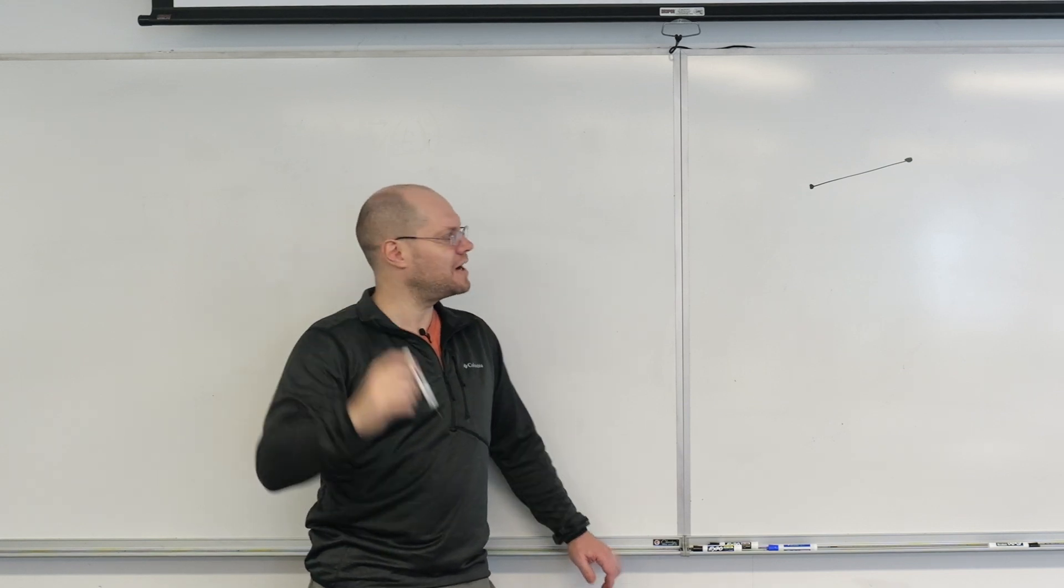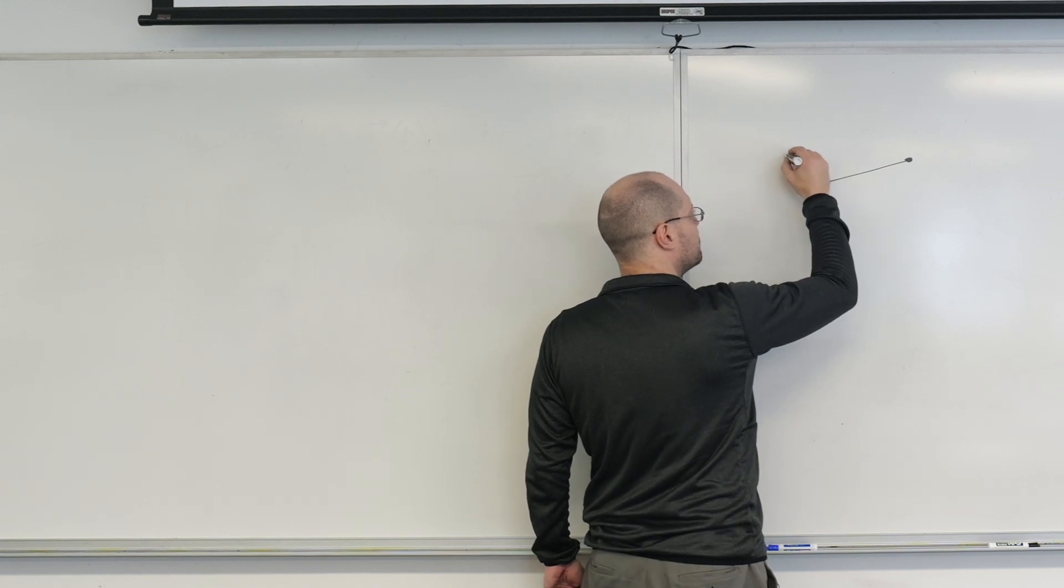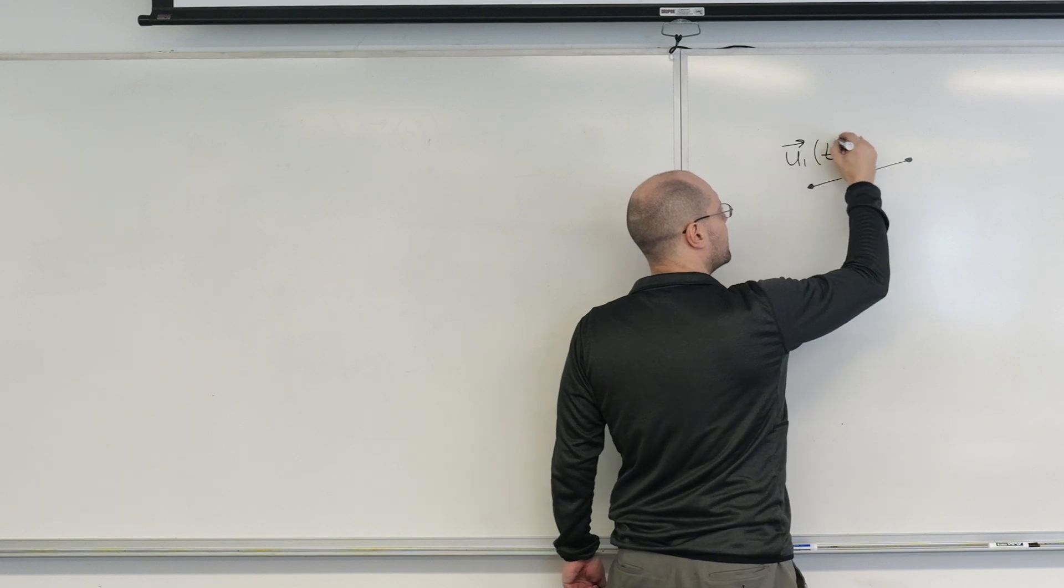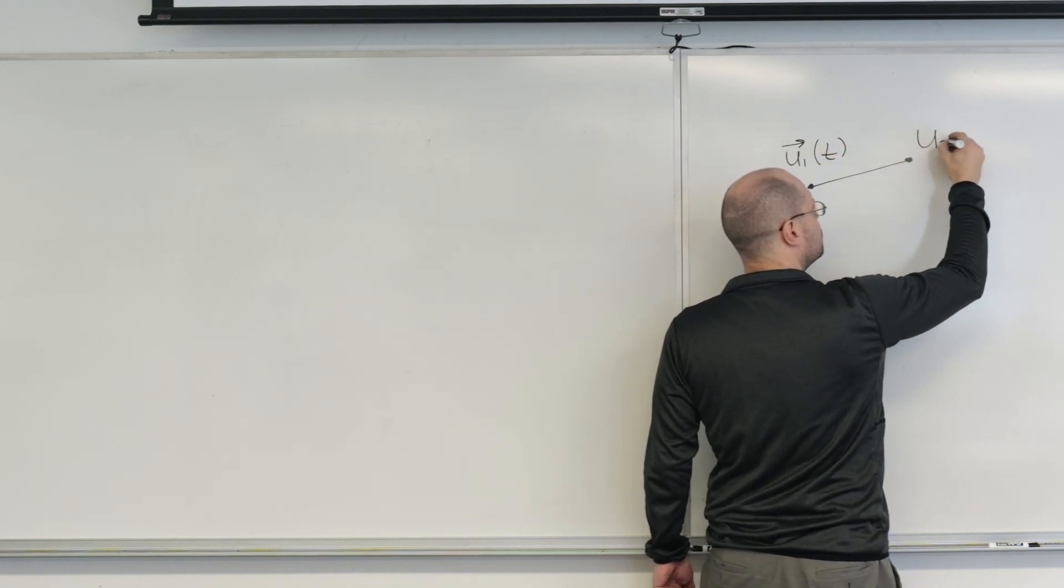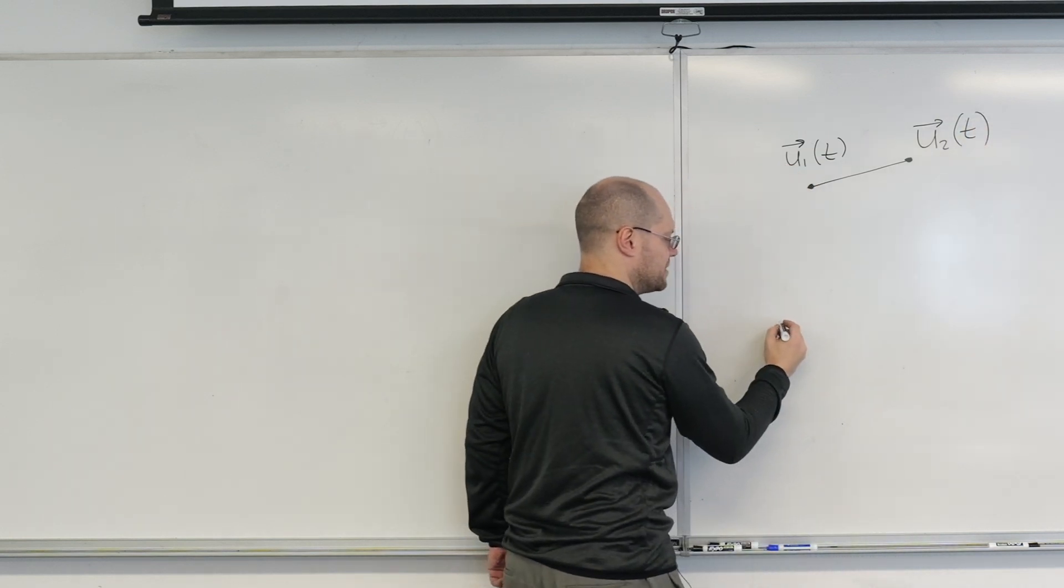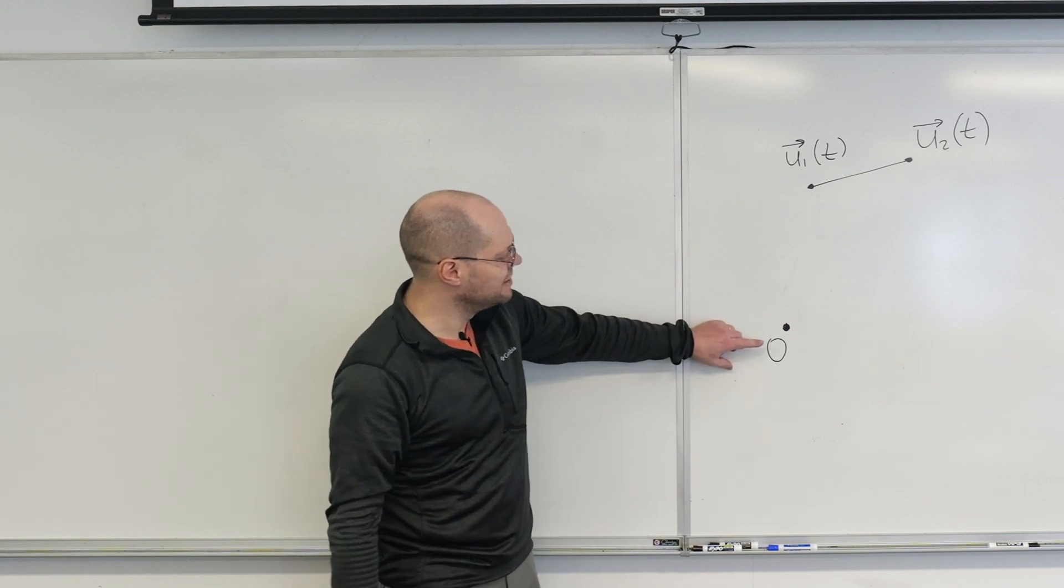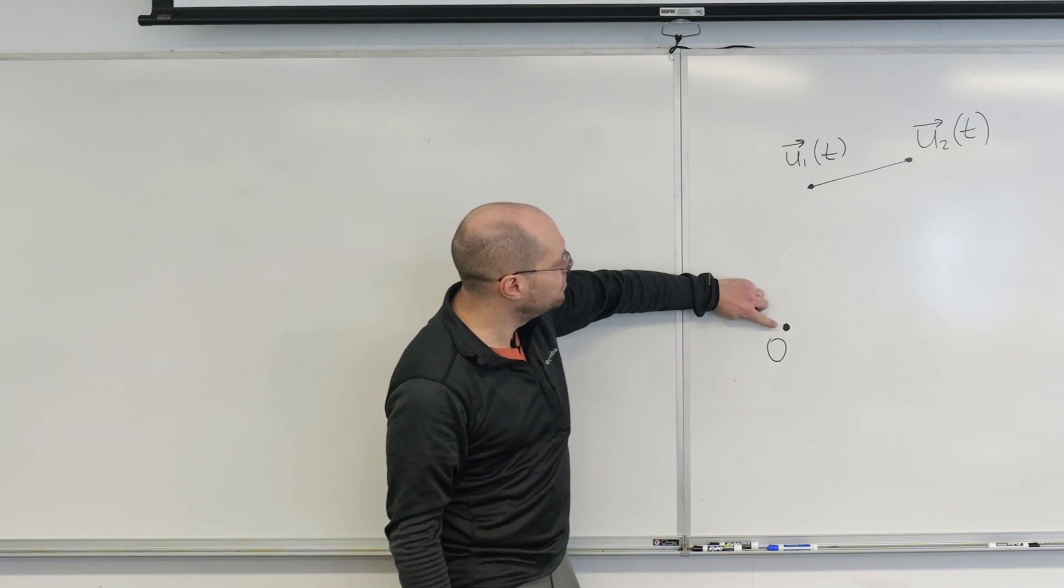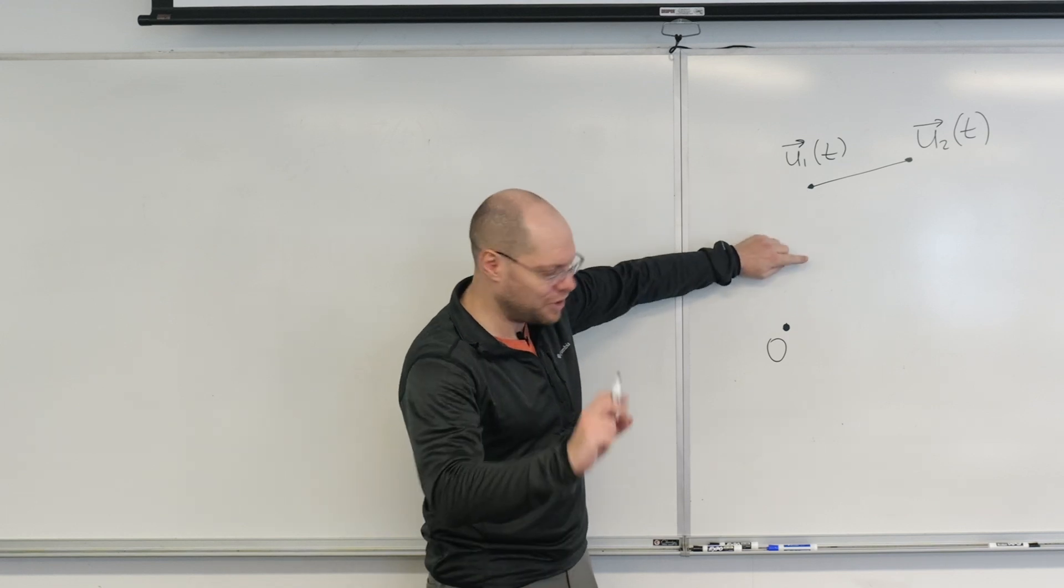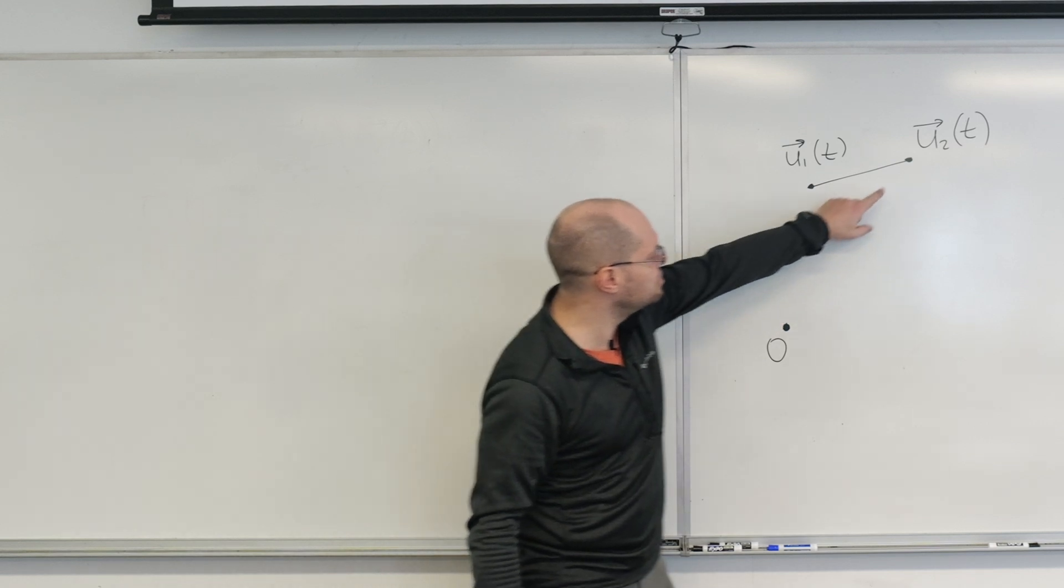If I were to describe its motion, I would describe the motion of one of its ends, and I will call it U1 of T, and the other end I would call U2 of T. This is all with respect to an arbitrary origin O. U1 points from the origin to one end of the marker, or your rigid bar, and U2 points from the same origin to the other end.